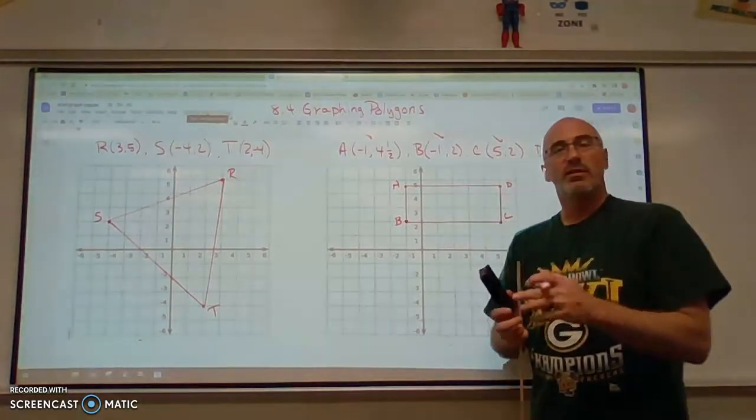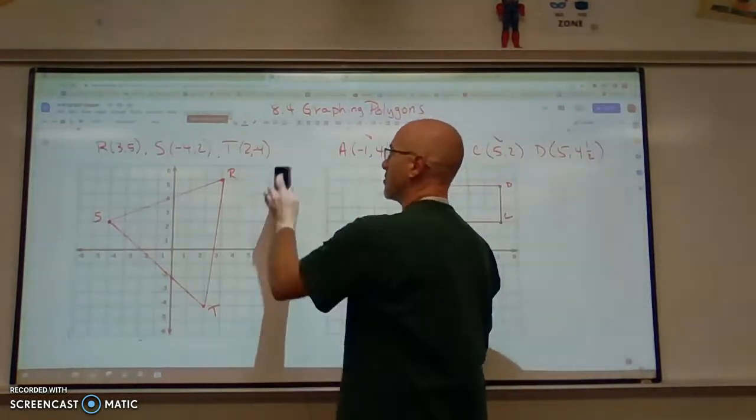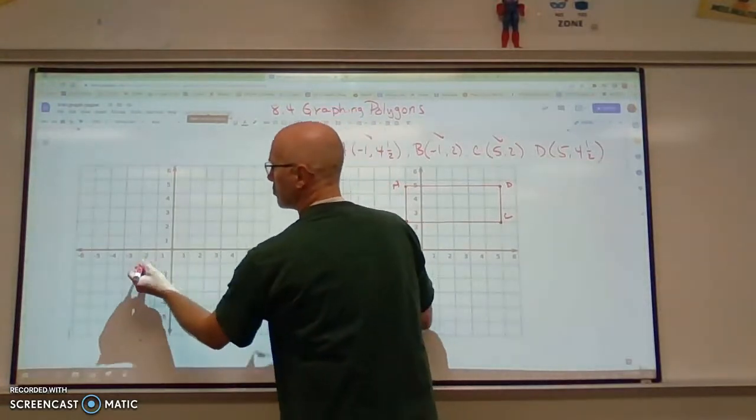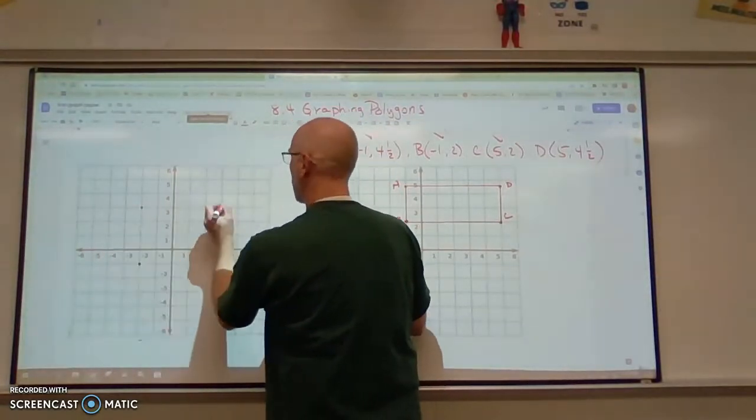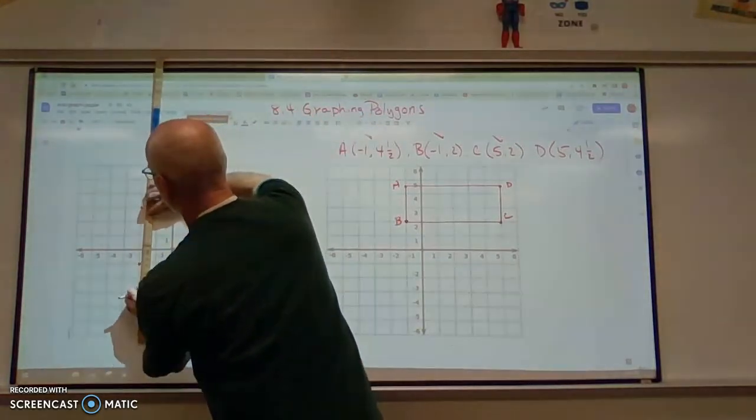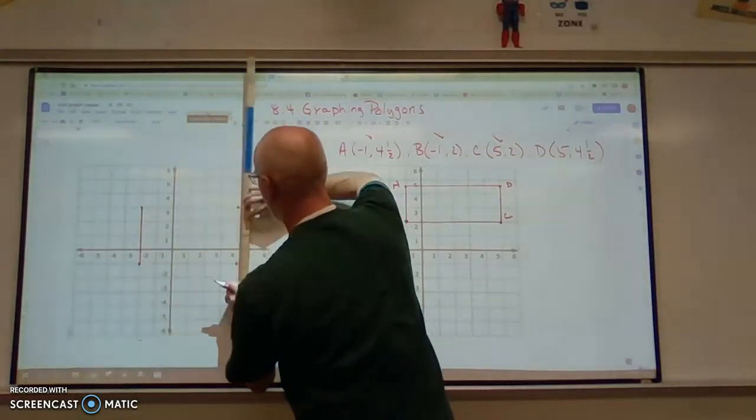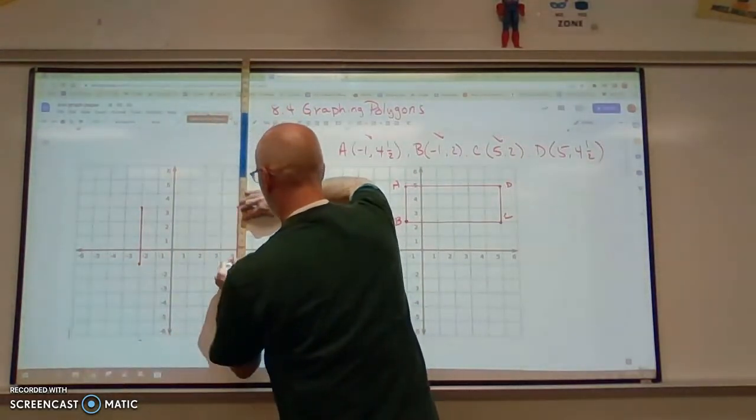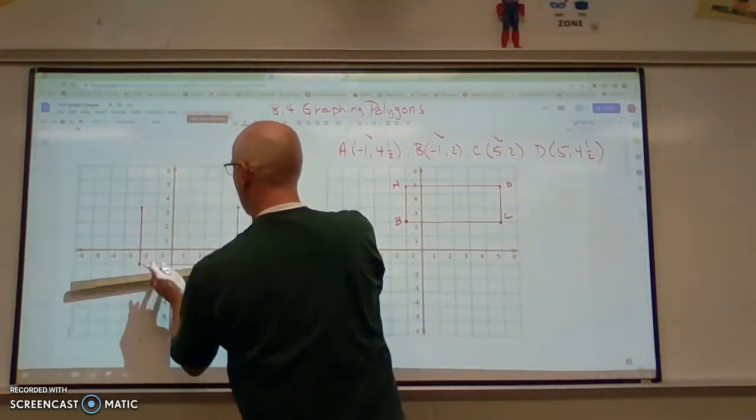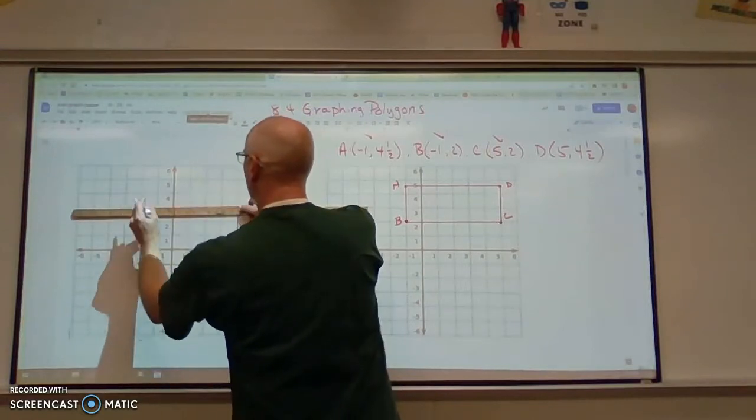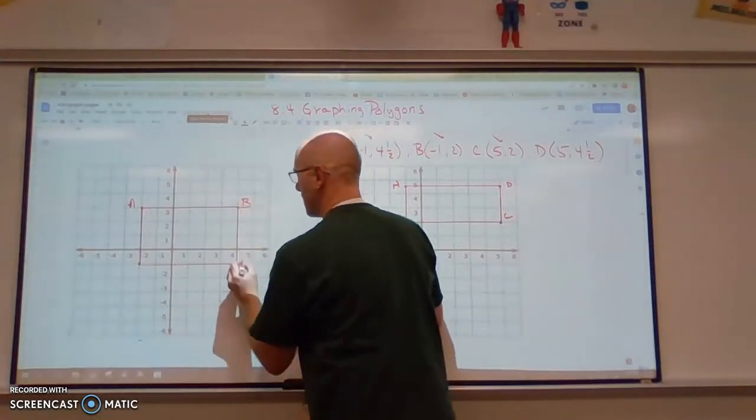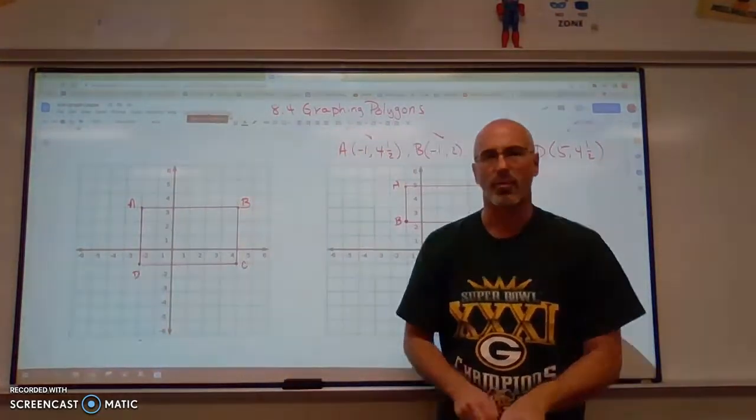One final item that we will be doing. I'm going to erase this triangle problem here. I am going to draw a rectangle for us using these points. I will just label this A, B, C, D. There is my rectangle.